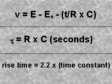The time constant represents the time taken by the initially uncharged capacitor to reach 63.2% of the value of E. Sometimes a term called rise time is used.